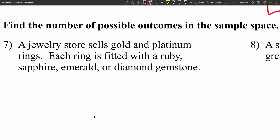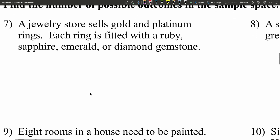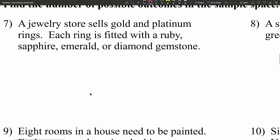The next set of directions says to find the number of possible outcomes in the sample space. That's essentially what we've already been doing — counting the different options in our set. So we'll build the set and then count.